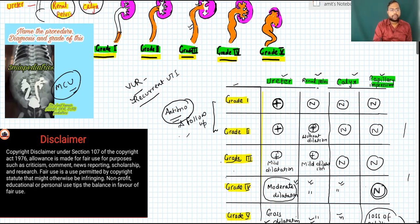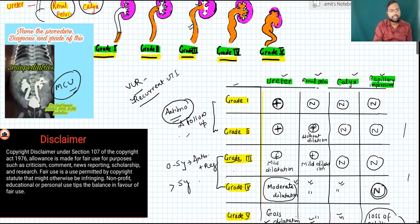For Grade 3 and Grade 4, if the child is zero to five years of age, we give antibiotic prophylaxis plus regular follow-up. If the child is more than five years of age and it is unilateral VUR, give antibiotic prophylaxis; if it is bilateral, proceed to surgery.